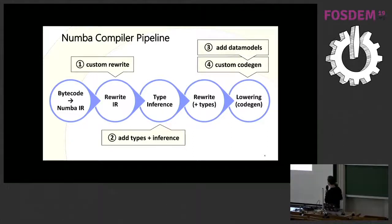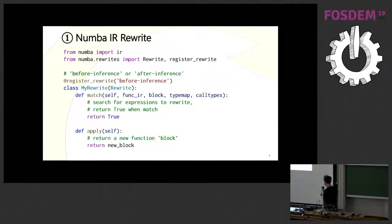I will now go into a bit more detail of all those extension points. Let's start with the beginning. I was talking about the rewrite phase. Numba likes decorators very much. This is basically how all the extensions work. Here we say, we want to register our rewrite. We say it's before inference. As I said before, you have a rewrite step before inference, before type inference, and then one after inference.